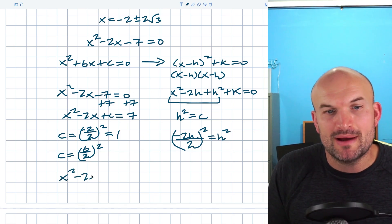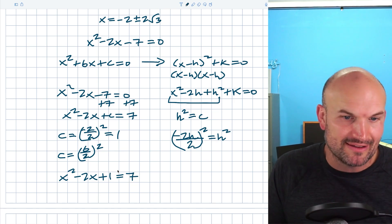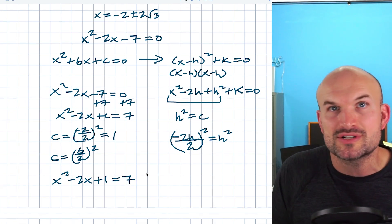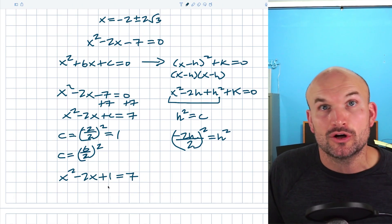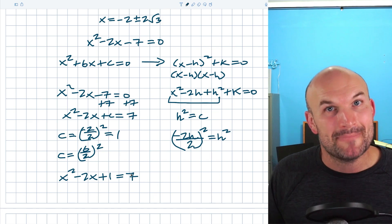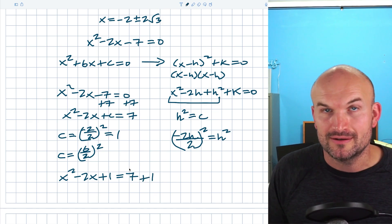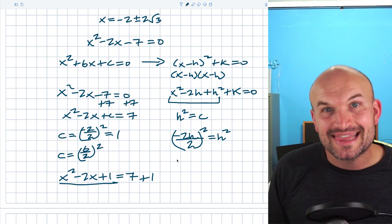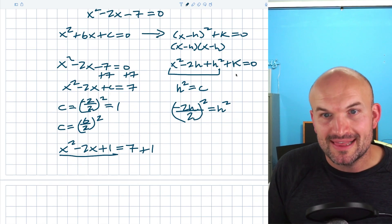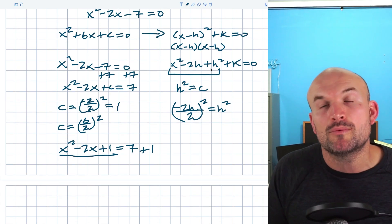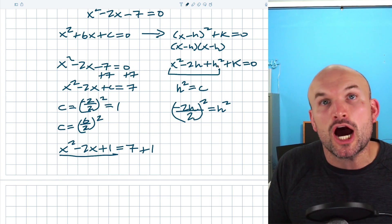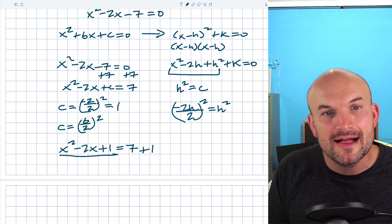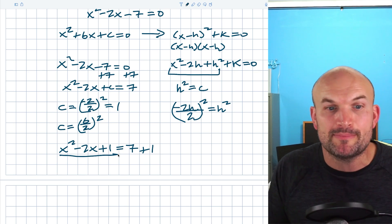That value c is what creates our perfect square trinomial. So I get x squared minus 2x plus 1 equals 7. But remember, whatever you do to one side of the equation you must do to the other — we can't randomly add 1 without keeping things balanced. So I add 1 to the right side as well, giving equals 8. This is now a perfect square trinomial, exactly the form we're looking for.